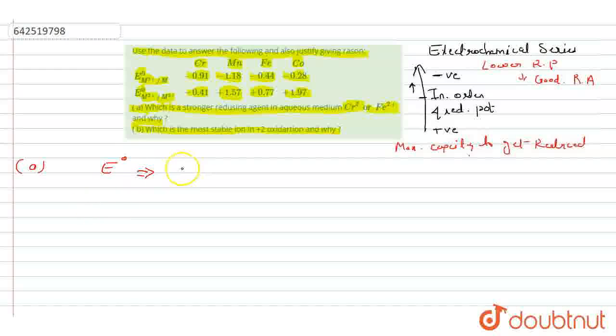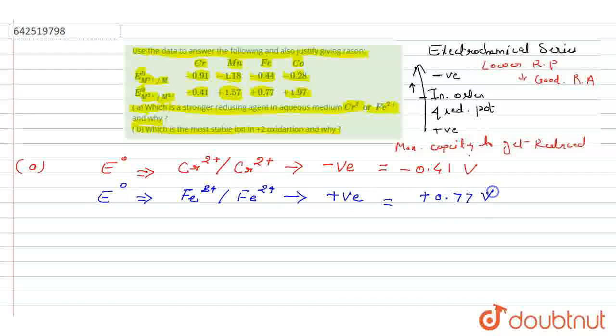The E° value for chromium Cr³⁺ to Cr²⁺ is negative, equals to minus 0.41 volt. Similarly, E° value for iron Fe³⁺ to Fe²⁺ is positive and equals to plus 0.77 volt.